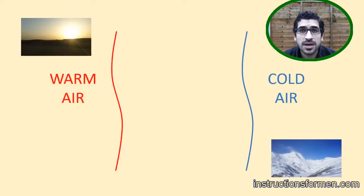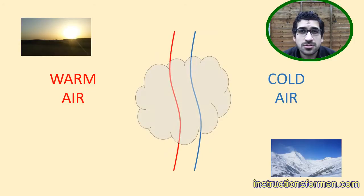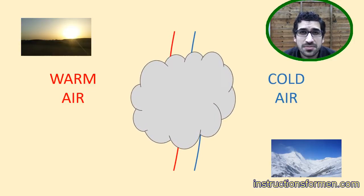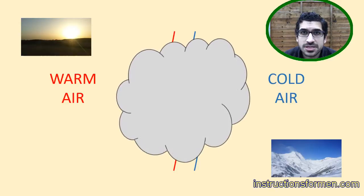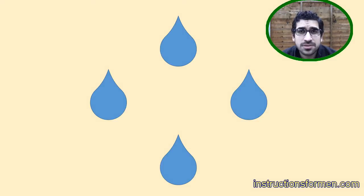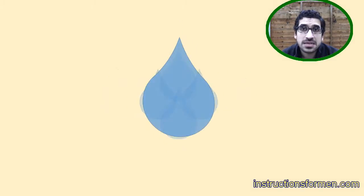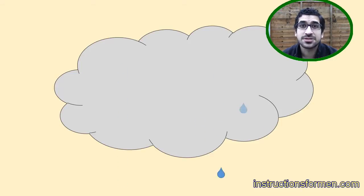Rain occurs when warm air saturated with water meets cooler air. As the warm air cools, it can hold less water vapour, creating clouds of tiny water droplets — much like when you breathe out on a cold day and you get a little mist. The water droplets in the cloud band together to form bigger water droplets, which become too heavy to stay in the cloud and precipitate out as rain.